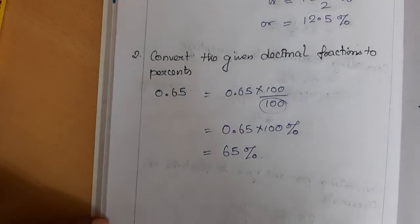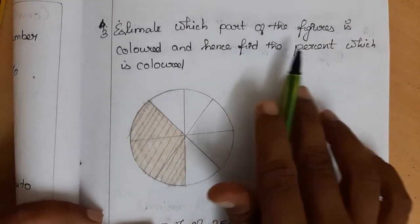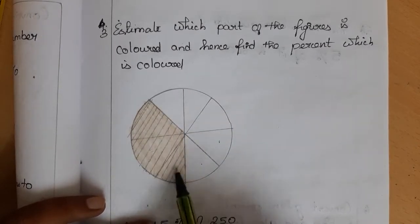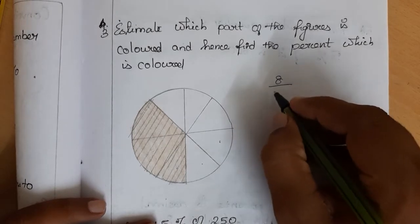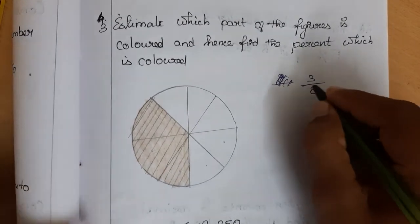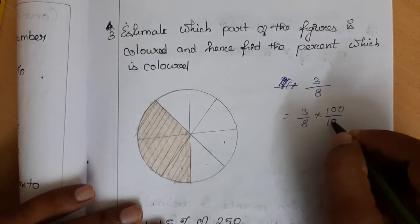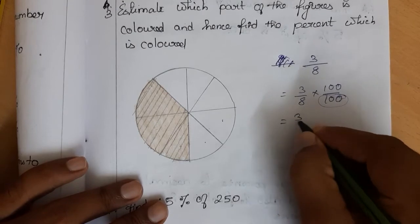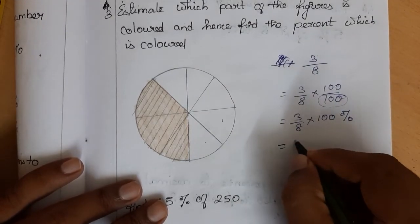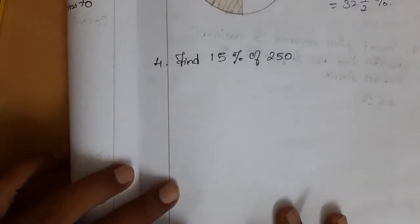Next problem: estimate which part of a figure is colored and find the percent that is colored. We count the total parts: 1, 2, 3, 4, 5, 6, 7, 8 — so there are 8 parts total. Of these, 1, 2, 3 parts are colored, so 3 out of 8 are colored. To find the percentage: 3/8 into 100 percent, which simplifies to 37 and 1/2 percent.